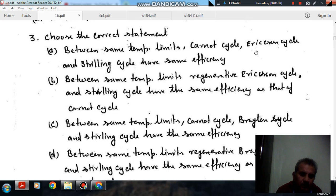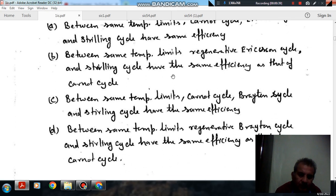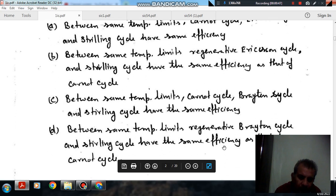Option C: between same temperature limit, Carnot cycle, Brayton cycle and Sterling cycle have the same efficiency. Option D: between same temperature limit, regenerative Brayton cycle and Sterling cycle have the same efficiency as that of Carnot cycle.